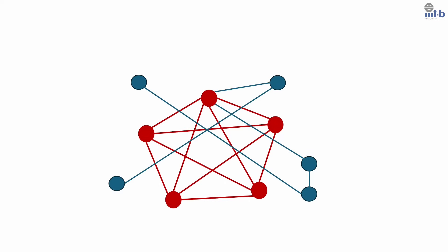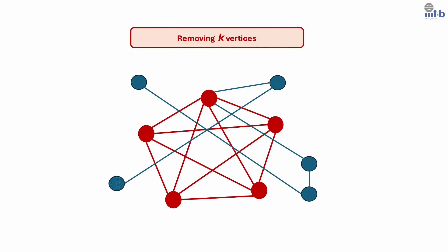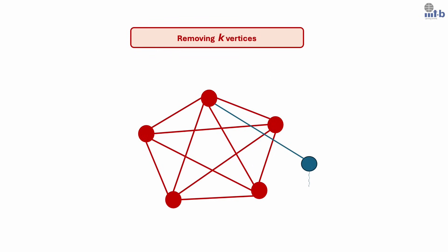Next, we turn to the second graph class: cliques. In this case, we are looking at graphs where if we delete exactly K nodes, the remaining structure forms a complete graph or a clique. For this class, we have shown that there exist FPT algorithms when parameterized by K. However, unlike path-based graphs, preprocessing here cannot asymptotically reduce the graph size under complexity theoretic assumptions.